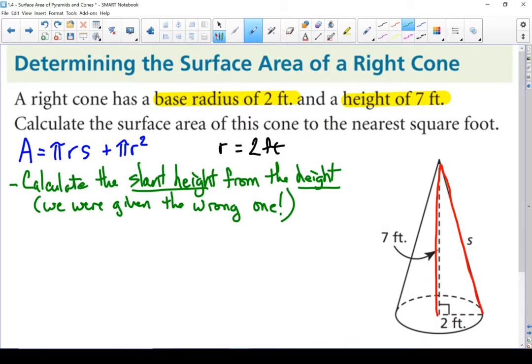To calculate that slant height I'm going to draw that little triangle from inside our cone. Put in the pieces that we know. I know that this side is 7 feet. I know that this bottom is 2 feet. And this hypotenuse is s. That's the slant height. That's the piece we need to find. Now since we have a right triangle there, I'm going to use the Pythagorean theorem. Remember c is my hypotenuse, a and b are the legs. I know a and b. Let's use it to find that hypotenuse.